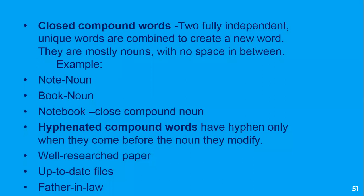Closed compound words — you have two independent words that have a meaning of their own; they stand alone. They are combined to create a new word with a new meaning. For instance, note is a noun, book is a noun. Notebook is a combination of two nouns. It is a closed compound noun.